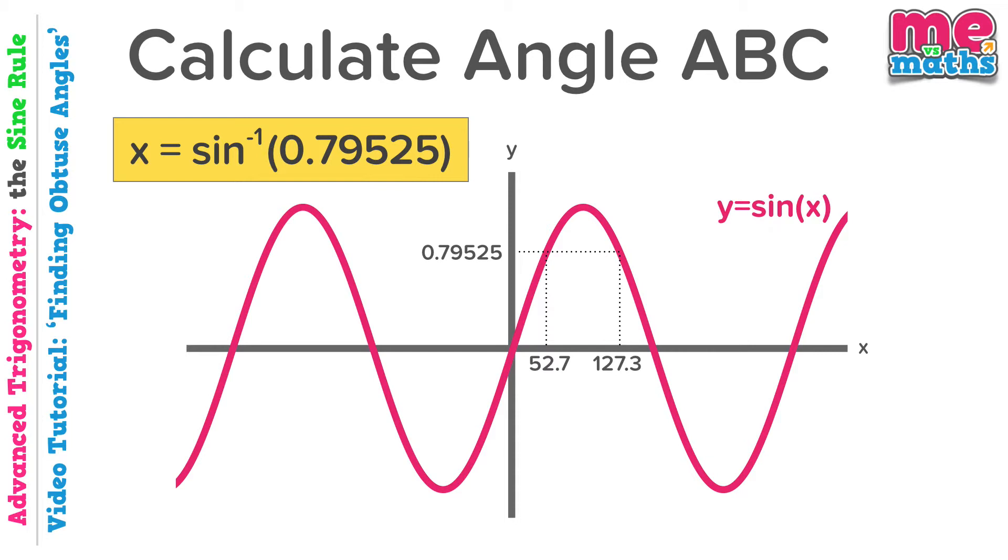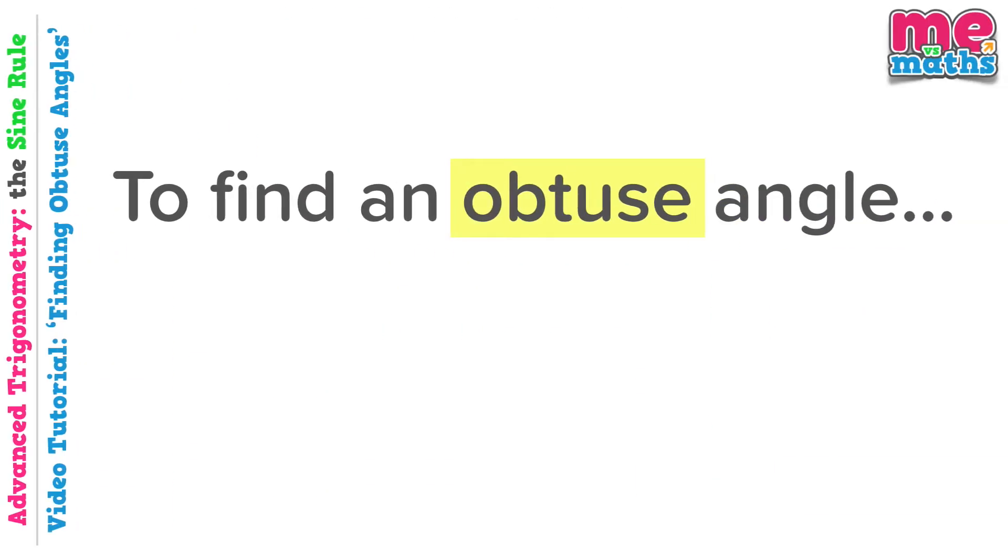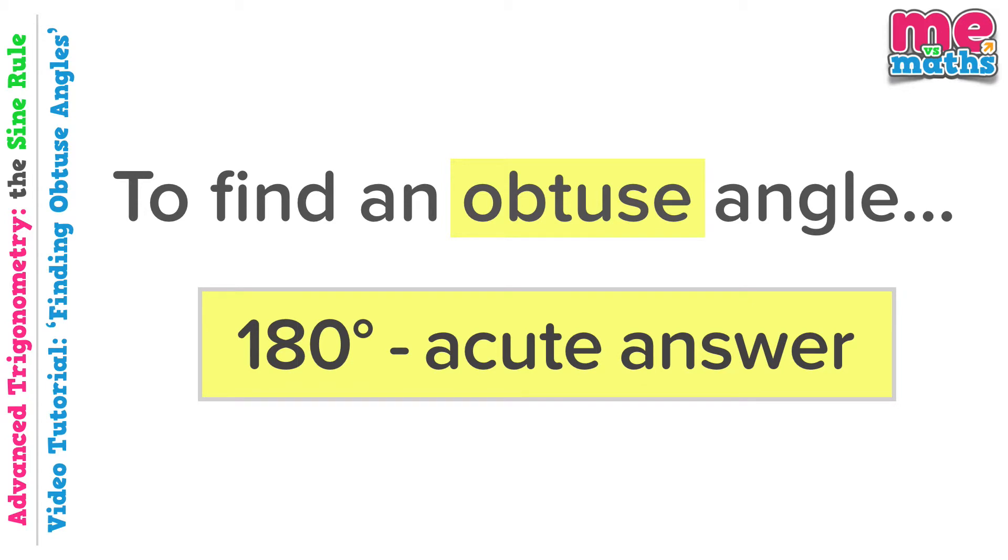That's a very brief background on why we have to do something different when looking for obtuse angles. As I say we're not trying to investigate the graph of sine X here. So the last thing and the most important thing to notice is that 127.3 is equal to 180 minus 52.7. So to find an obtuse angle with the sine rule all you have to do is subtract your acute answer from 180 degrees.